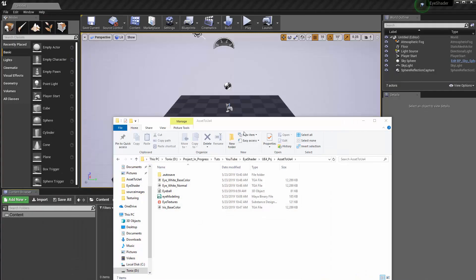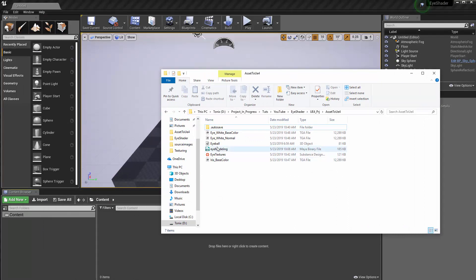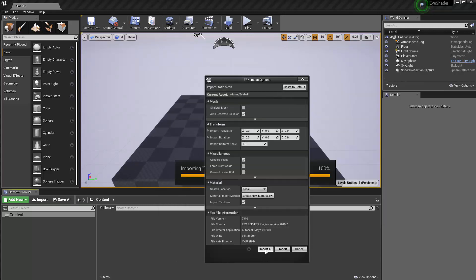Let's just use those three images for now. I'm going to grab the eyeball, eye white normal, eye white base color, and iris base color—those three things—and drag them into the content browser, and then import them all.